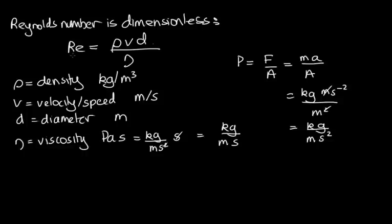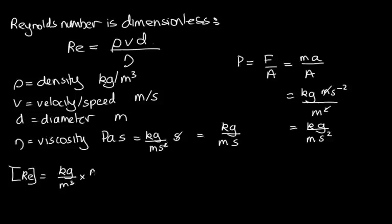Now we're going to work out what the units for Reynolds number are, and hopefully show that these are in fact dimensionless. The units for Reynolds number: density is kilograms over metres cubed, velocity is metres over seconds, and diameter is metres.